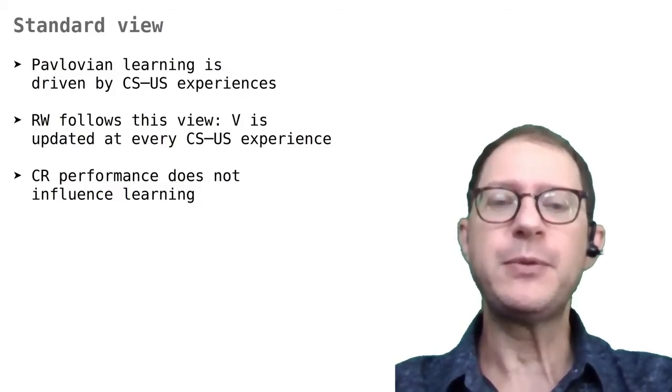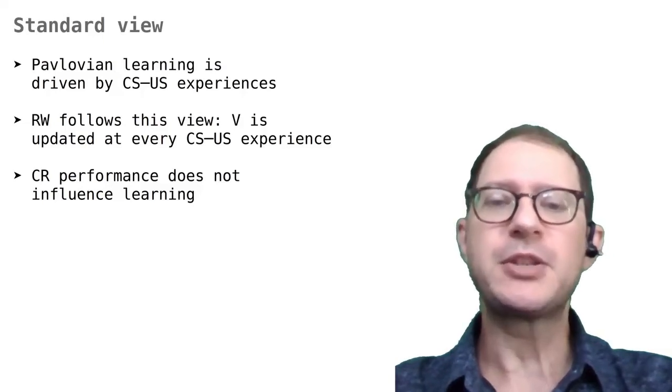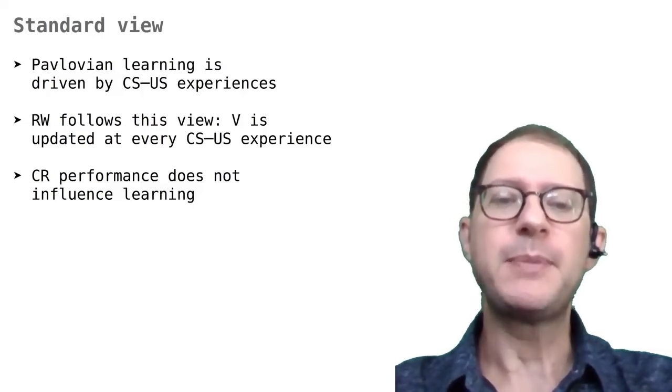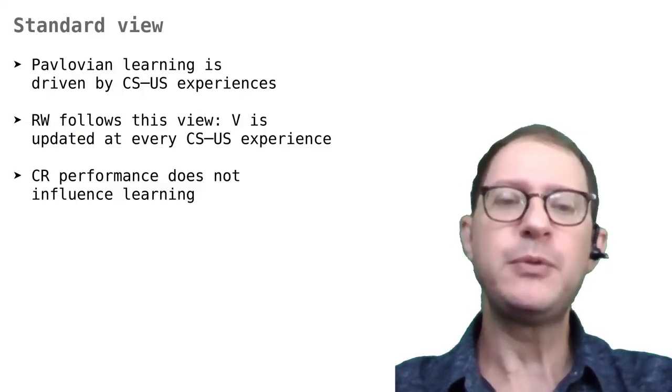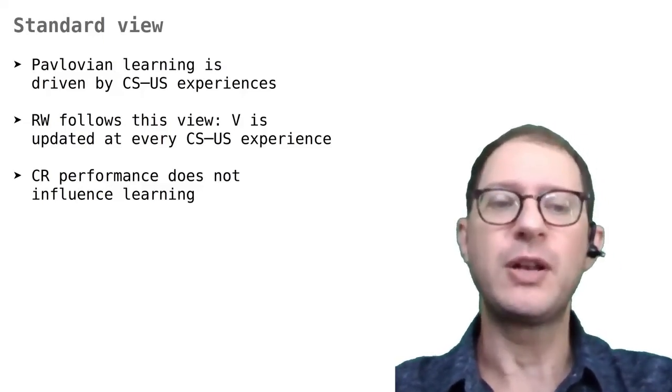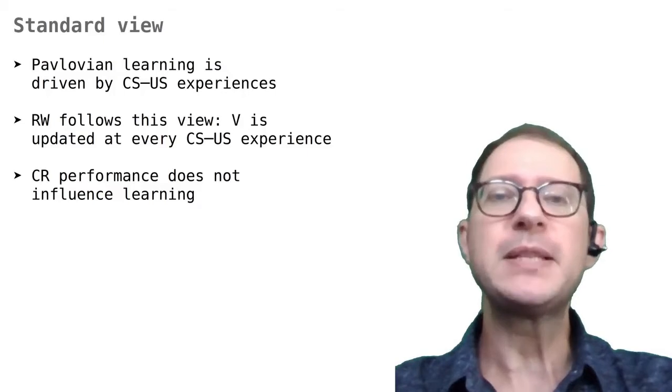The standard view here is that memory is updated every time the animal perceives a CS followed by a US. For example, we typically describe Pavlov's experiment by saying that there is a sequence of Bell-Food experiences, and we say that the dog learns based on these experiences.